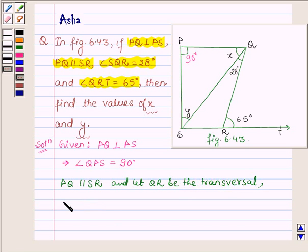This implies angle PQR will be equal to angle QRT. Since if two lines are parallel and a transversal intersects them, then the pair of alternate interior angles are equal.